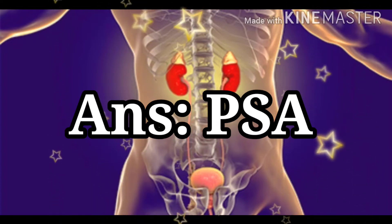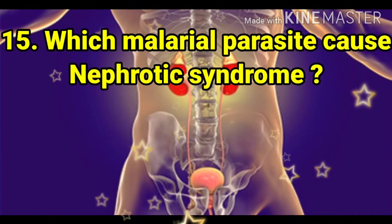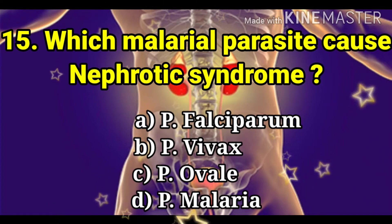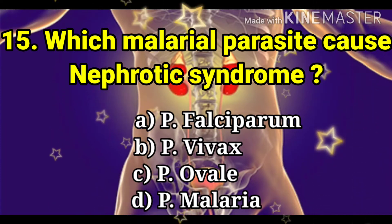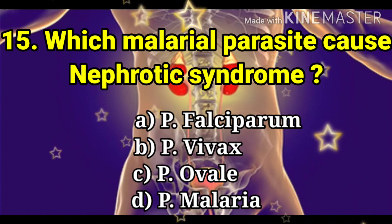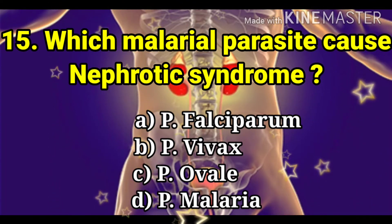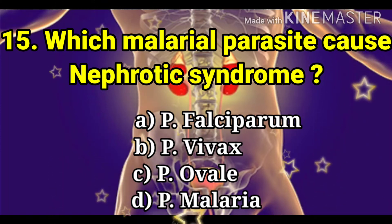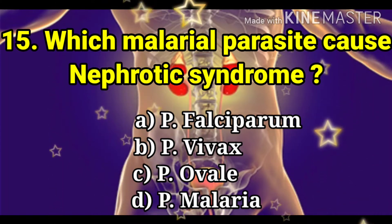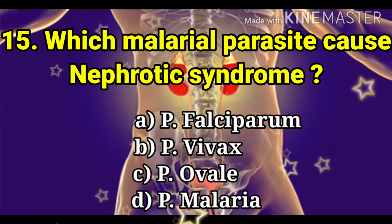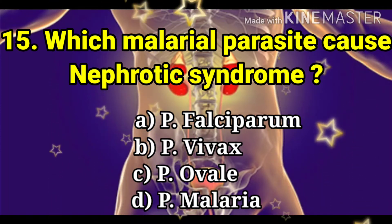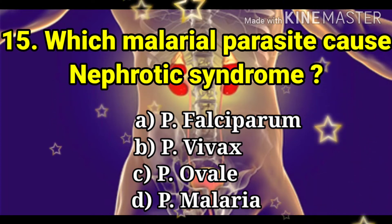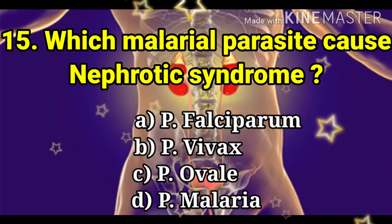Next question: which malarial parasite causes nephrotic syndrome? The options are Plasmodium falciparum, Plasmodium vivax, Plasmodium ovale, and Plasmodium malariae.